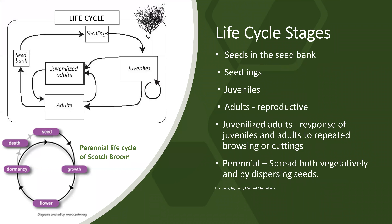You can see here the scotch broom life cycle. It begins with the seeds and the seed bank on the left, then moves up to seedlings, then juveniles, and the plants mature into adults. There is an additional cycle: when plants are cut back extremely or burnt by fire they rejuvenalize and cuttings can sprout seeds again. Because the plant is a perennial, it spreads both vegetatively and by dispersing seeds, making it very hardy.